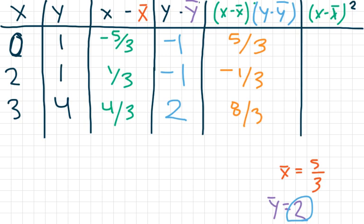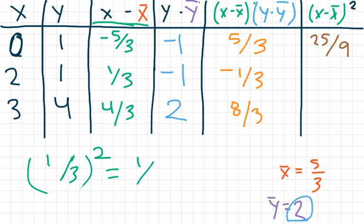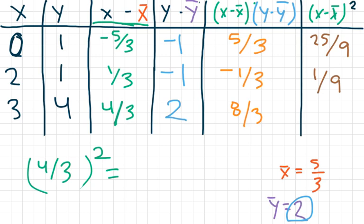One final step: we take each x minus the mean of x value and square it. Negative five thirds squared: negative five squared is twenty-five, three squared is nine, so that's twenty-five over nine. One third squared is one ninth. And four thirds squared gives us sixteen over nine.